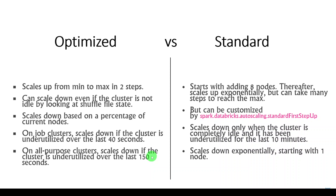For optimized auto scaling on all-purpose or interactive clusters, it will scale down the number of worker nodes if the cluster is underutilized for 150 seconds. Overall, optimized auto scaling allows Databricks to aggressively adjust the number of worker nodes depending on the workload. Standard auto scaling changes nodes in an exponential manner regardless of whether the workload is complex or light. This is the main difference, and it plays an important role in both performance optimization and cost saving.